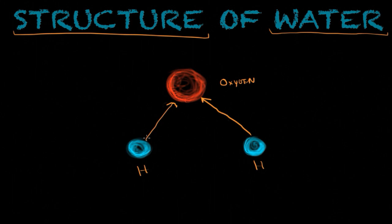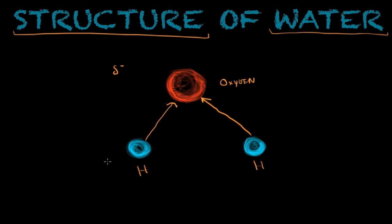For that reason, you will find around the oxygen a negative charge, leaving these two hydrogens with less negativity due to the fact that the electrons are being pulled towards the oxygen. Therefore, you're going to end up with a positive charge on the hydrogens. For this reason, water is then a polar molecule.